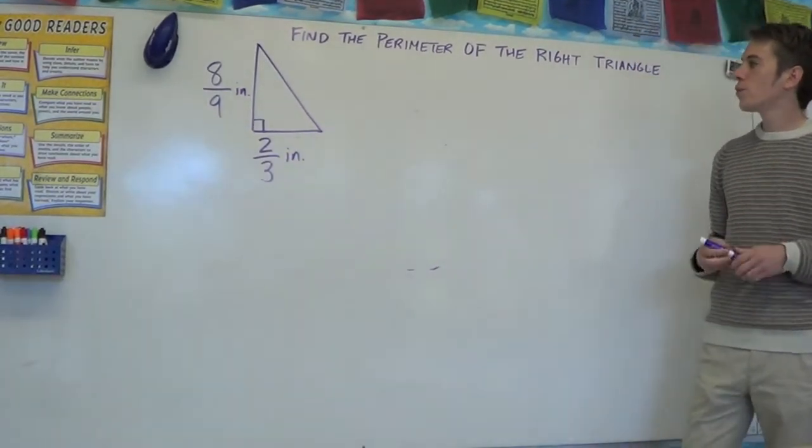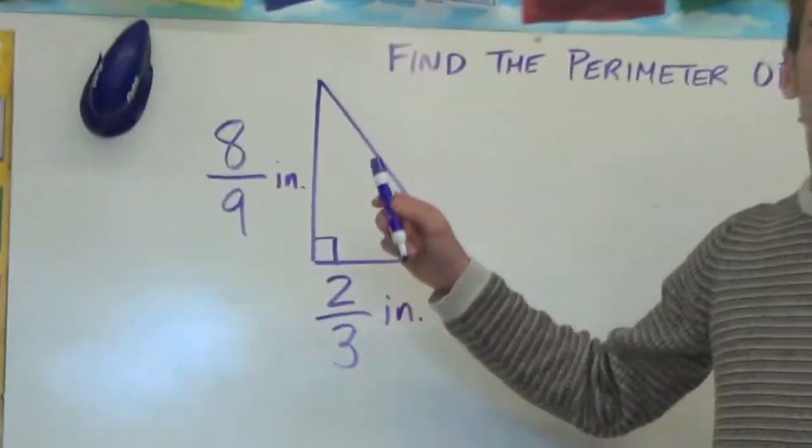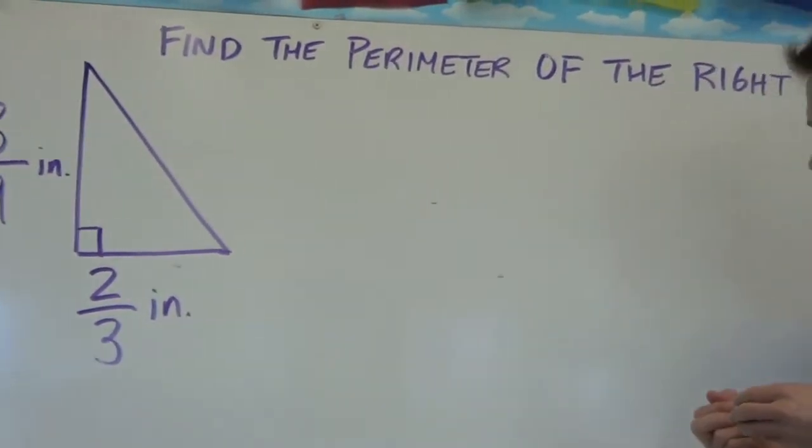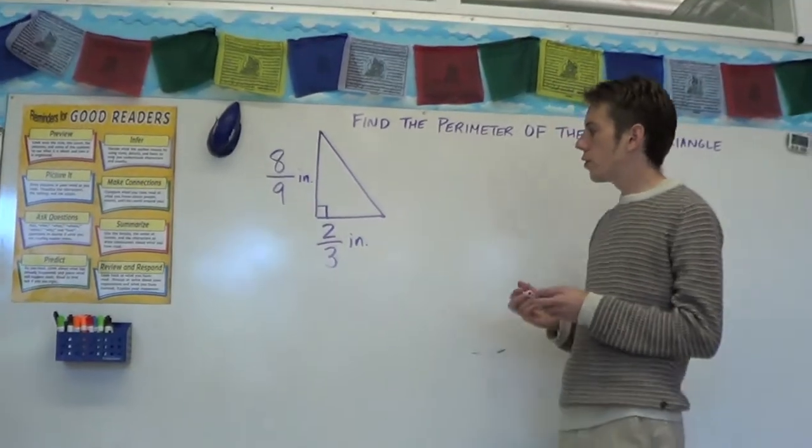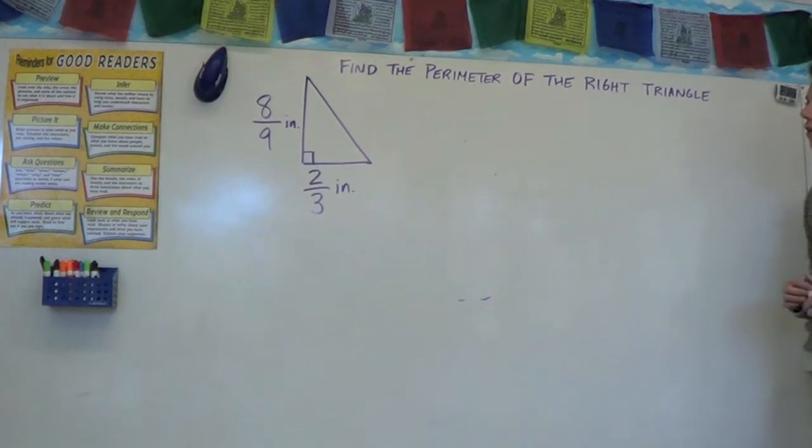So this is a really difficult bonus problem because it's combining a couple of different topics. First of all, we got fractions because the side lengths of this right triangle, the two legs, are both fractions. This one's eight-ninths of an inch and this one's two-thirds of an inch. And the problem asks us to find the perimeter of the right triangle.